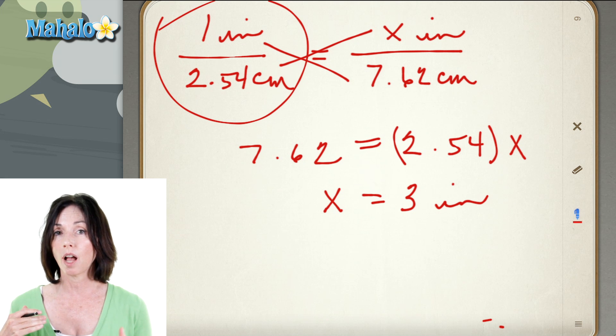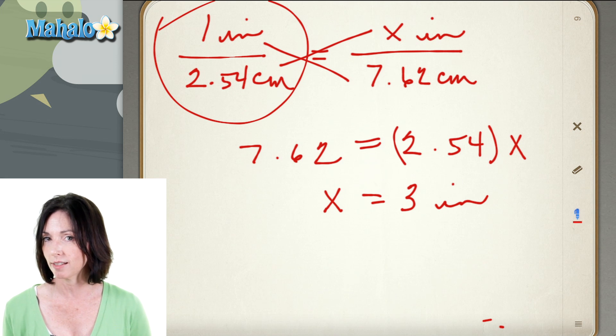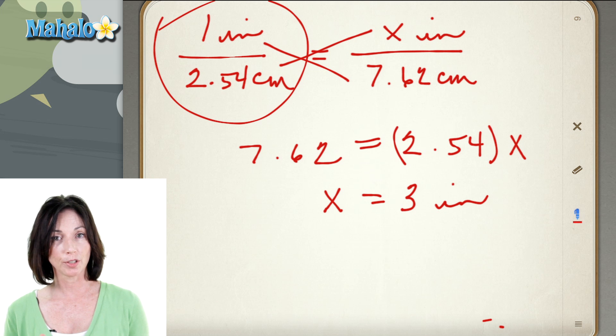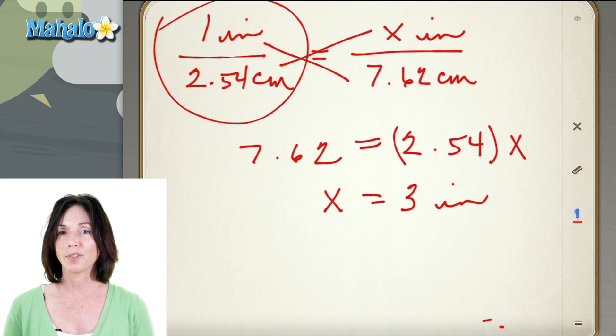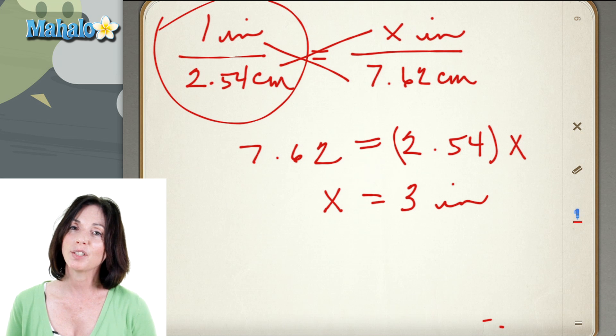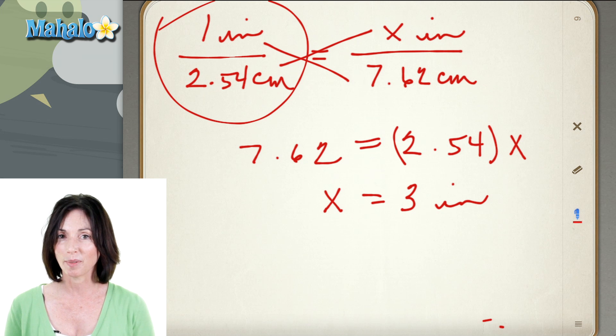If you put inches on the top on one side you have to put inches on the top on the other. And if the centimeters are on the bottom you got to keep the centimeters on the bottom. Then you just cross multiply and solve for the thing that you're missing. And that's how you do conversions from inches to centimeters.